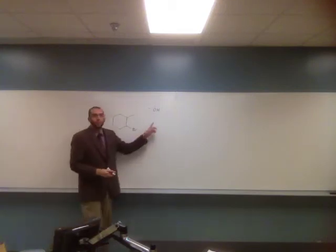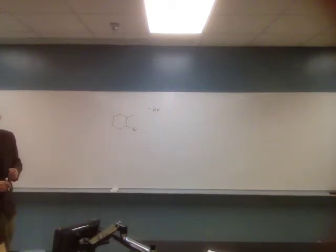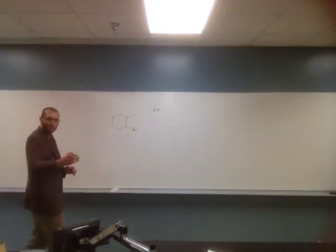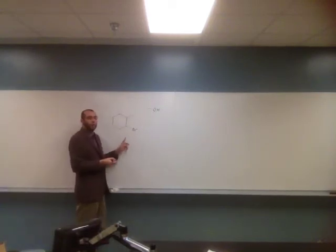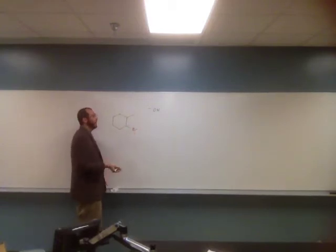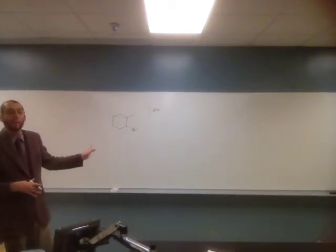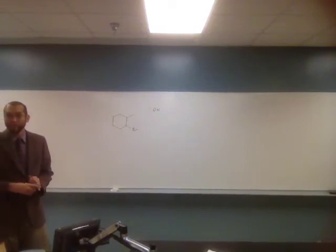OH⁻ is a strong base, and what do bases do? They deprotonate. So where is the acidic proton? It's going to be one of the alpha protons to the bromine. We're going to want to form the most stable product because this is an E2 reaction. The most stable product is the Zaitsev product. Which alkene would be more stable — forming the alkene to the left or right? The right one, because it has more substituents — more carbon atoms attached.